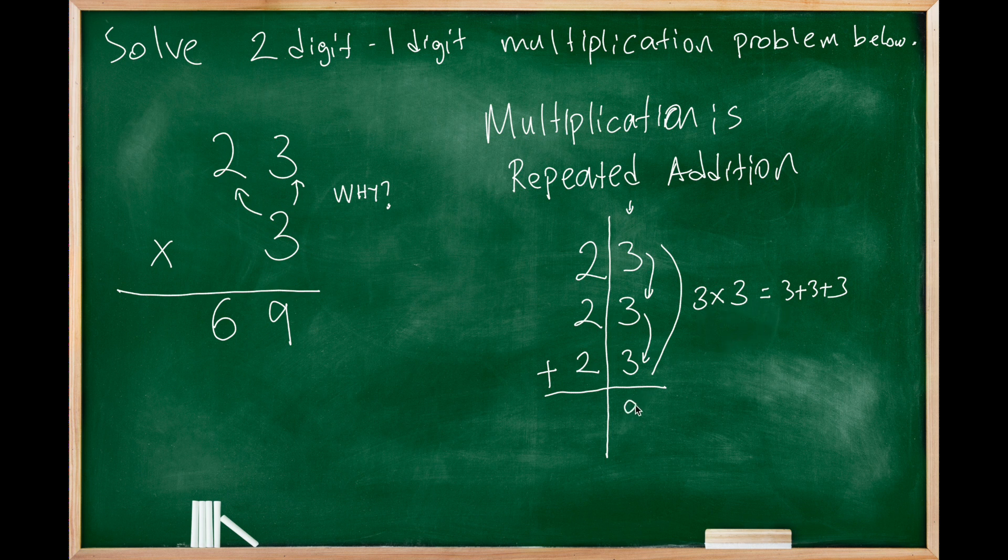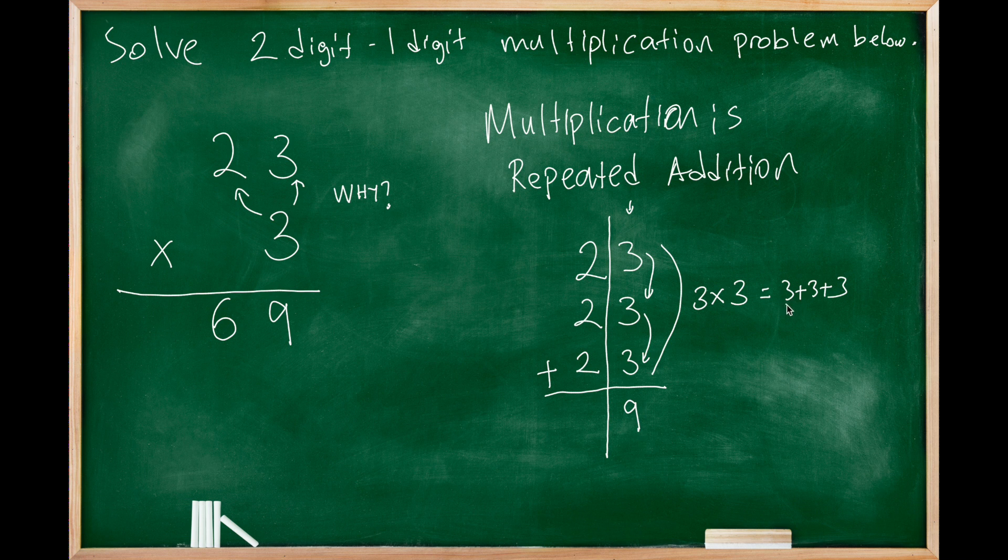So that makes nine. 3+3+3 also is nine. These are the same thing. So we move to the tens place. We move from the very right place, which is the ones place, and we move to the left in standard algorithm.